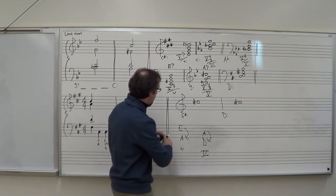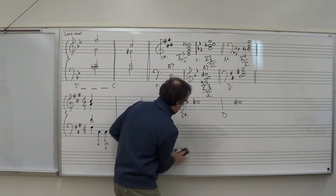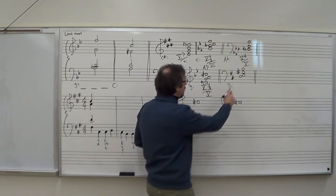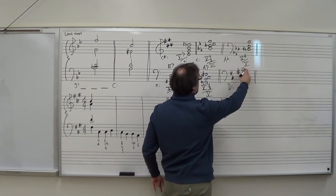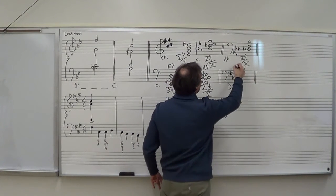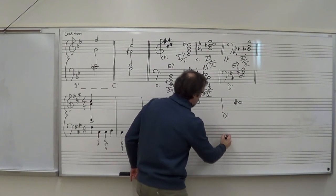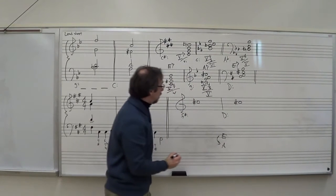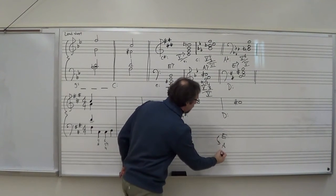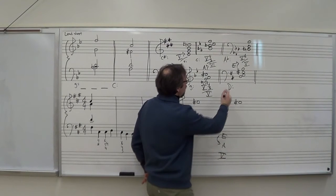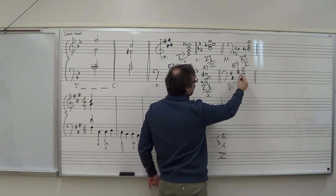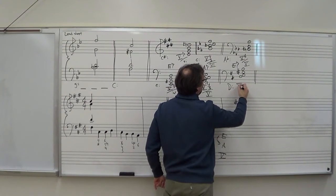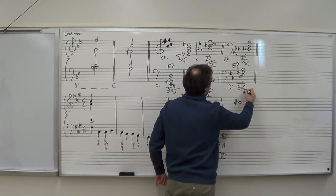In D major, looking at the pitches: D, E, G-sharp, B — or rearranged, E, G-sharp, B, D. That is an E7 chord. E down a perfect 5th would be A. A is 5 in the key of D. We have an inversion here — the D is in the bass, that means it's in third inversion. So 5-4-2 of 5.